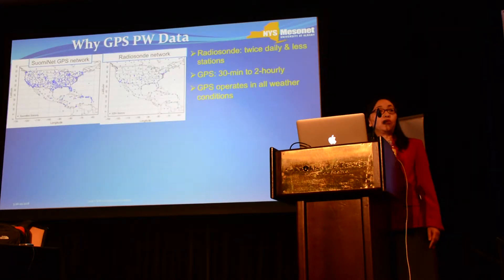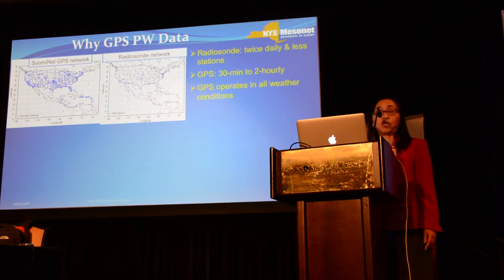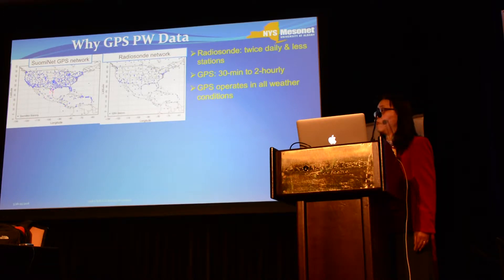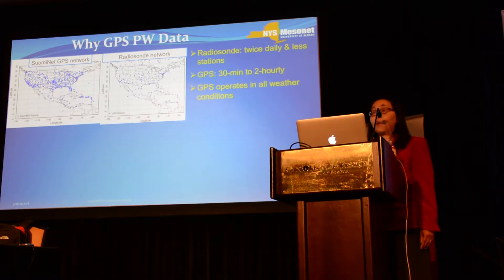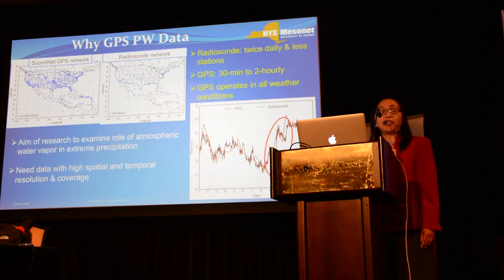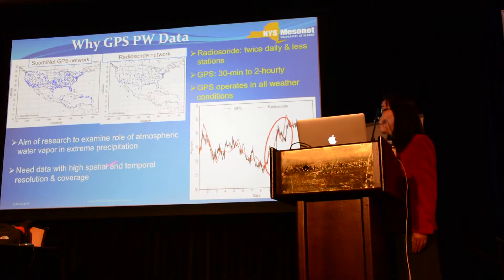What we want to do is use ground-based GPS-derived water vapor data to study water vapor characteristics. You might wonder why you need GPS data. If you compare the SuomiNet GPS network with the radiosonde network, you will see much denser stations from GPS. For temporal sampling, GPS can be 30 minutes to two-hourly, but radiosonde is just twice daily. GPS is also available under all weather conditions. So the aim of this project is to examine the role of water vapor in extreme precipitation, requiring high spatial and temporal resolution and coverage.